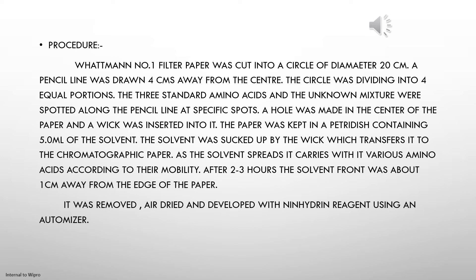The paper is kept in a petri dish containing 5 ml of solvent — the mobile phase. The solvent is sucked up by the wick, which transfers it into the chromatographic paper. As the solvent spreads, it carries with it the various amino acids. After 2 to 3 hours, when the solvent front is about 1 cm away from the edge of the paper, it is removed, air dried, and the amino acids are identified by spraying with ninhydrin reagent.